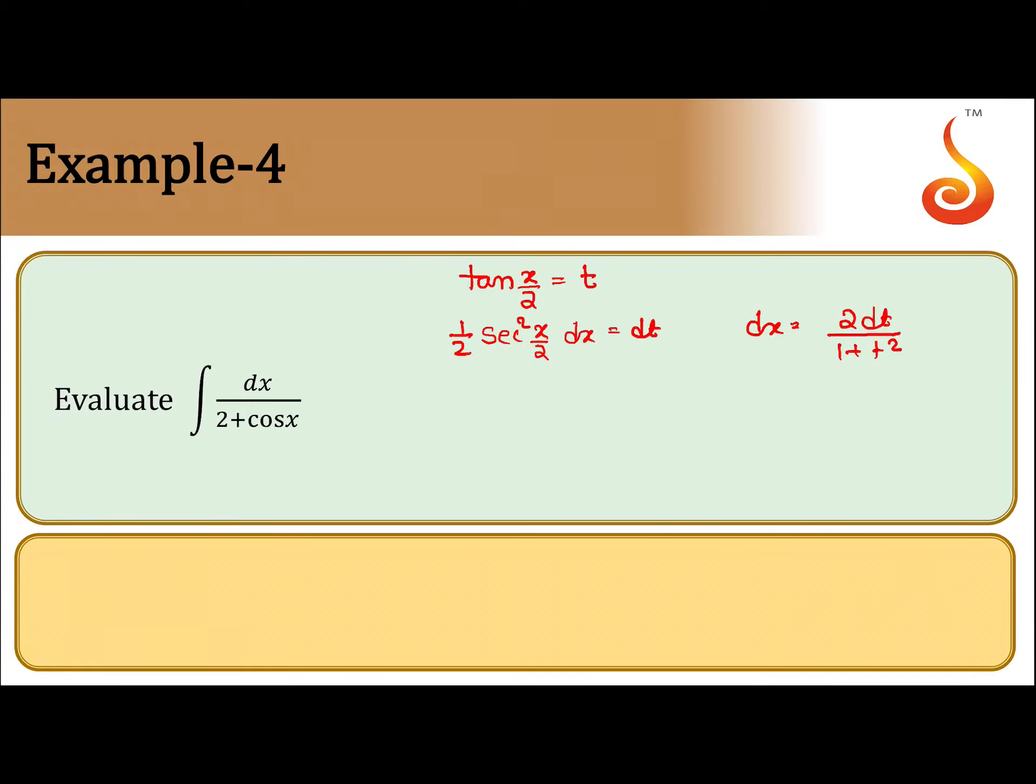So cos x is equal to 1 minus t square by 1 plus t square. Let us substitute that. We get 2 dt by 1 plus t square divided by 2 plus 1 minus t square by 1 plus t square.